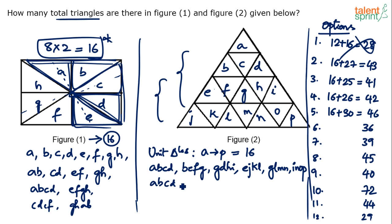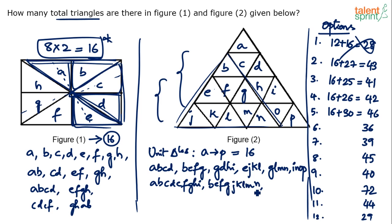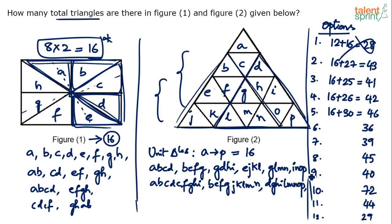Nine-unit triangles: first, A,B,C,D,E,F,G,H,I — the top three rows. Second, B,E,F,G,J,K,L,M,N — the middle section. Third, D,G,H,I,L,M,N,O,P — the bottom-right section. So we get three nine-unit triangles.